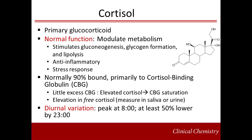The free form of cortisol is the active form, and is also the form primarily filtered by the kidneys for excretion. Since there is little extra unbound CBG available, elevations in cortisol will saturate CBG, thus producing an elevation in free cortisol. Because free cortisol is filtered into the urine and can also diffuse into saliva, excess cortisol may be measured in urine and saliva.